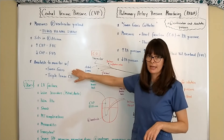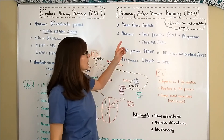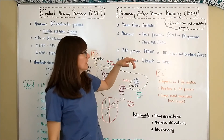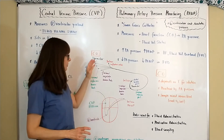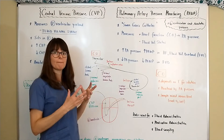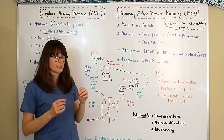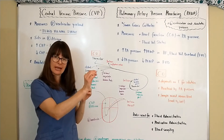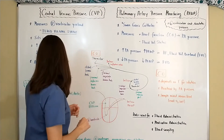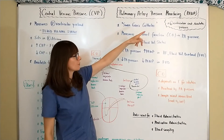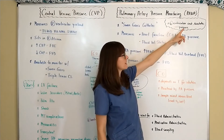CVP can be monitored with a Swan-Ganz catheter as well as a triple lumen central line. The pulmonary artery pressure monitoring, or wedge pressure, is also referred to as the Swan-Ganz catheter. The Swan-Ganz catheter is the invasive line that is inserted, and the pulmonary artery wedge pressure is the actual site where the end of that catheter resides. This helps us measure cardiac output. The pulmonary artery pressure monitoring or wedge pressure measures the left ventricular end-diastolic pressure.